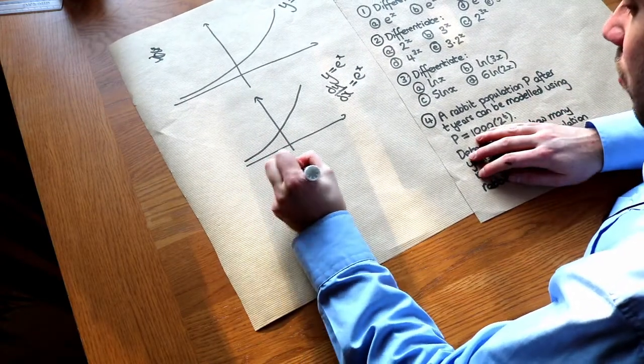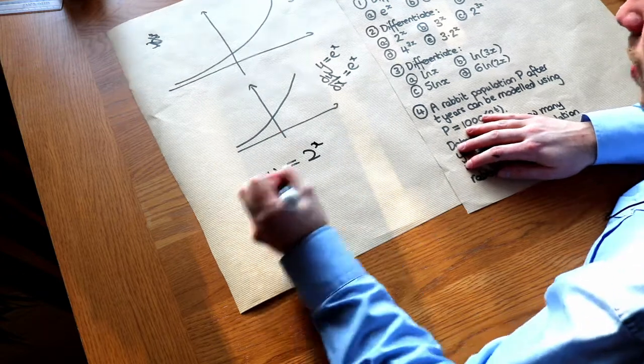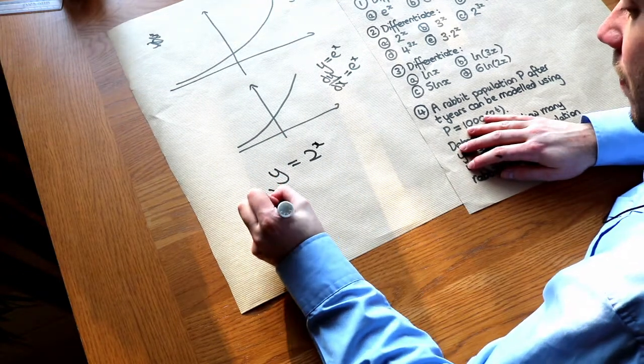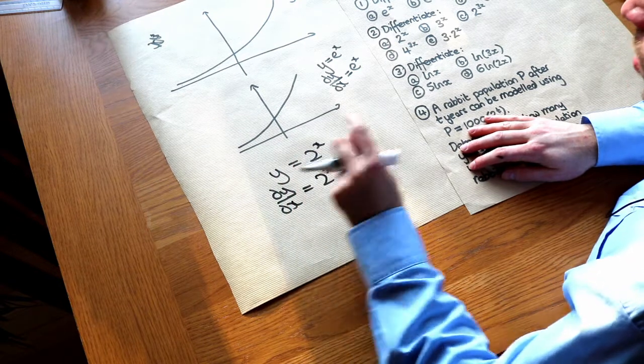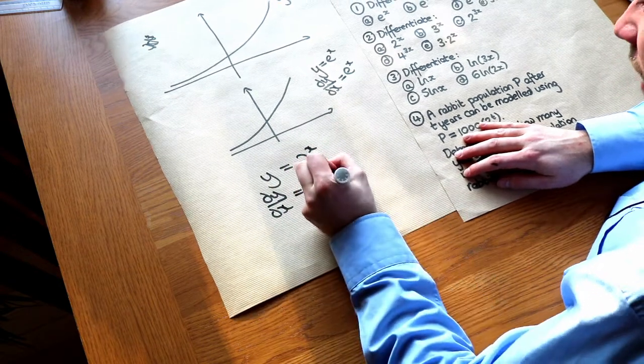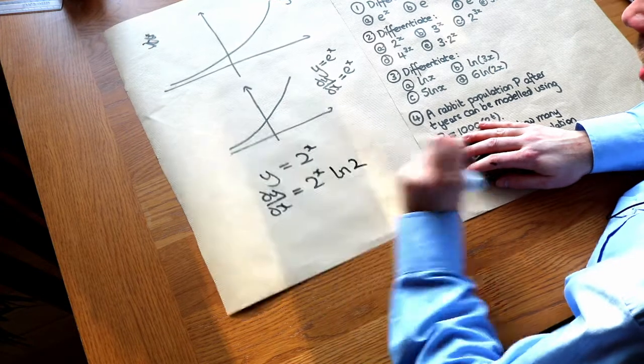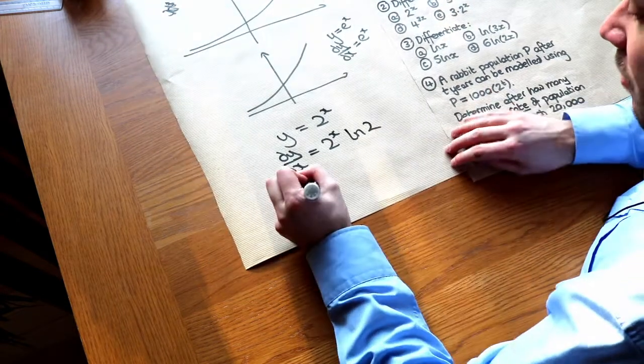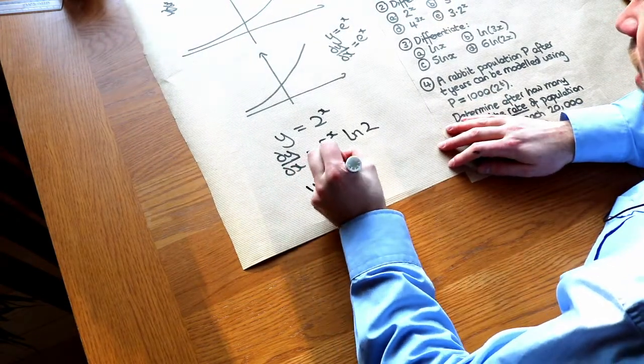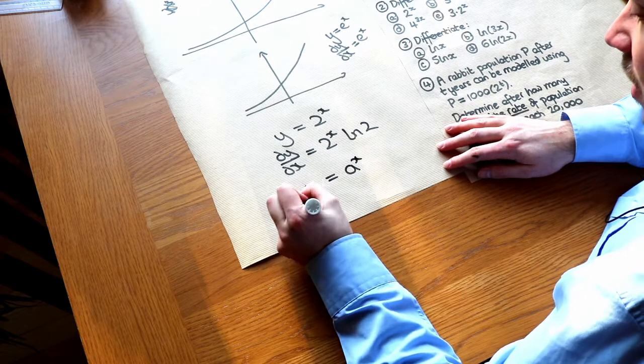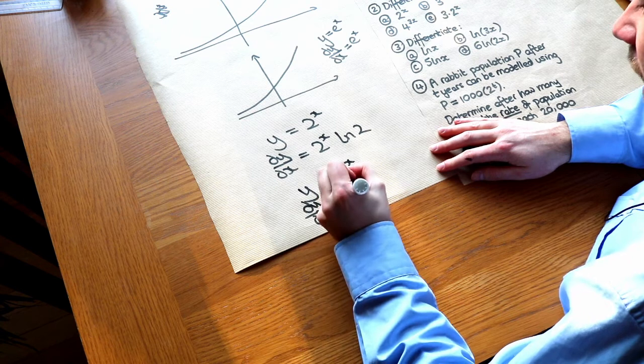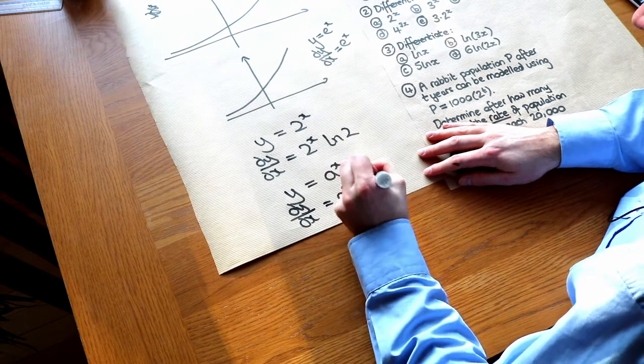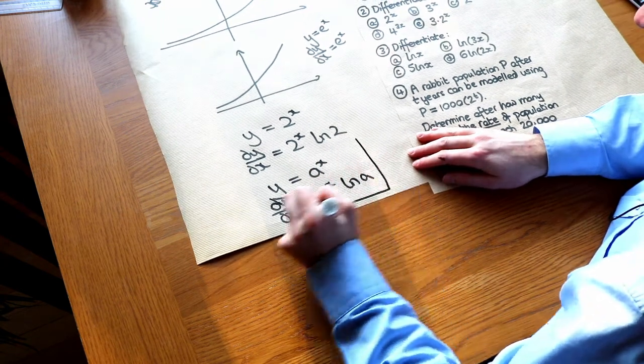So if you had say y equals 2 to the x, if you were to differentiate it, then what happens is that you multiply it by ln of the base, so ln of 2. So more generally when we have y is equal to some constant to the power of x, we get dy/dx is equal to a to the x and you times it by ln of the base, and that is a key result.